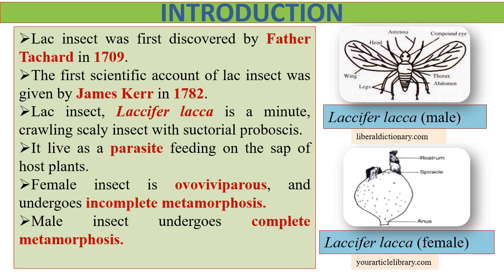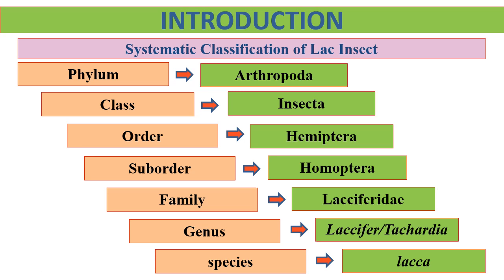The male insect undergoes complete metamorphosis, and this is one of the most important characteristics of lac insects. On the other side, we can see a pictorial diagram of adult male and female lac insects. This is the systematic classification of lac insects as given by James Kerr. Next comes the life cycle of lac insects.